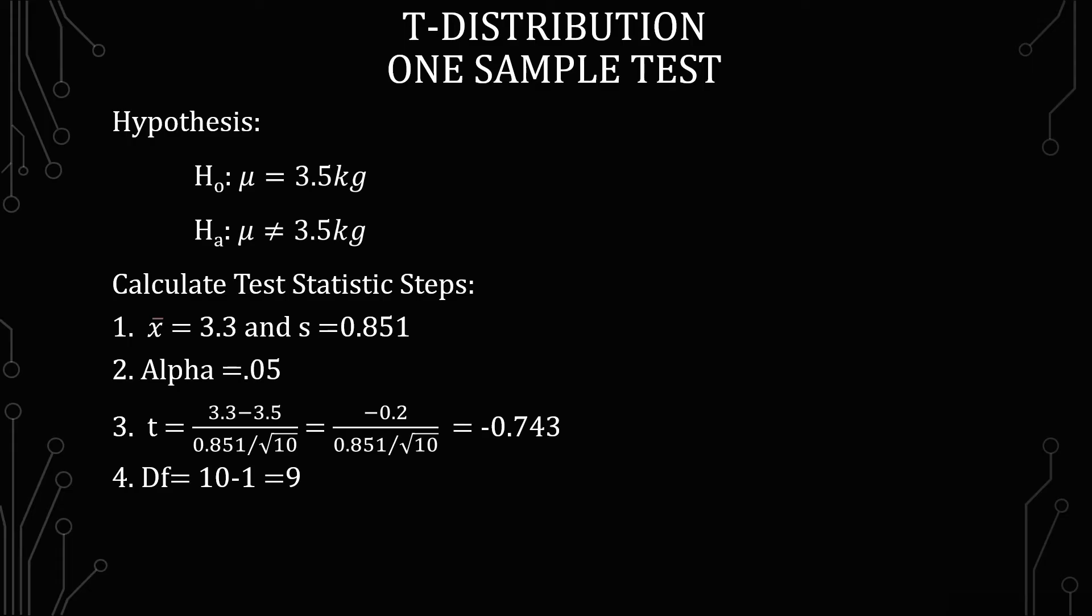When it comes to calculating the test statistics, we know that the sample mean is 3.3, and the standard deviation is 0.851. The alpha is 0.05, and from the calculation that we have, we have T equals 3.3 minus the 3.5 that we have in our hypothesis, divided by 0.851, which is the standard deviation, divided by the square root of 10, 10 being the sample size. And this equals negative 0.743. We understand that the degrees of freedom are 10 minus 1, so that equals 9.